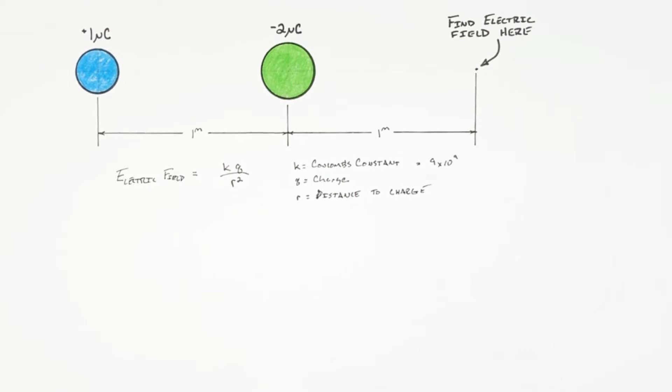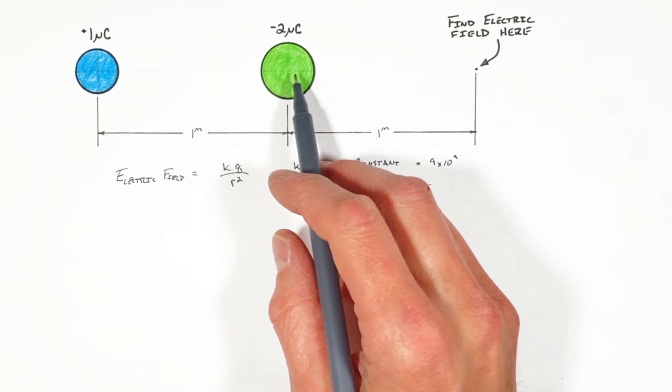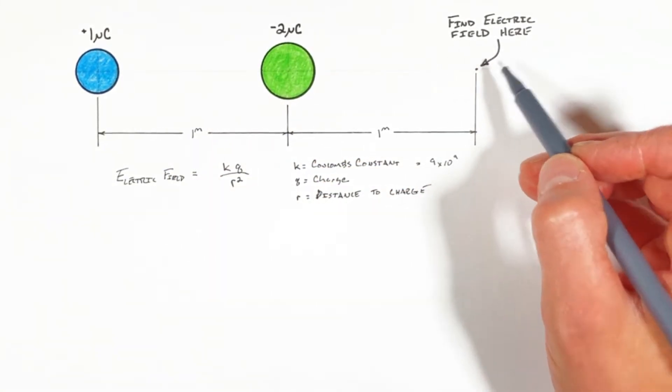So we're going to apply this equation for electric field to each charge individually, and then we're going to add those two electric fields together, and that's going to give us the total electric field.